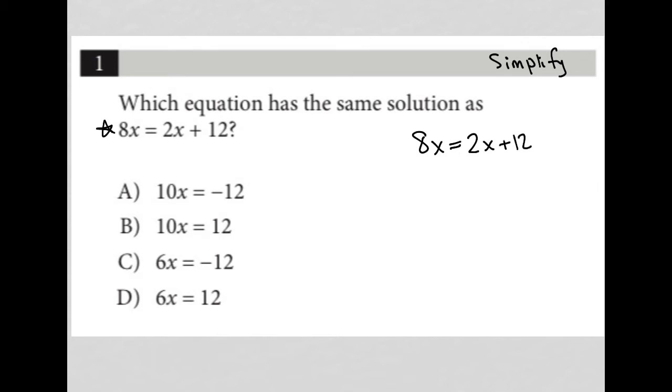And then I simplify that equation. So I'm going to combine like terms by subtracting 2x from both sides here, leaving me with 6x equals 12 and divide both sides by 6. And I get that x is equal to 2.